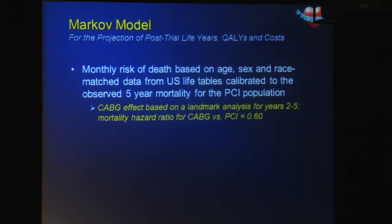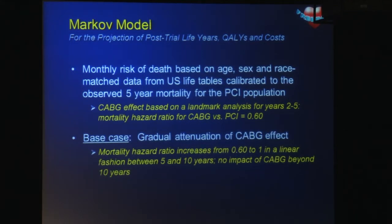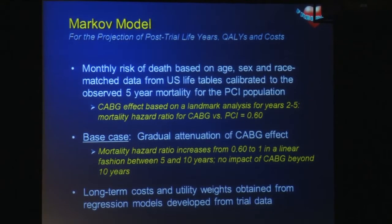We developed a Markov model to project the post-trial life years, quality-adjusted life years, and costs over the lifetime of the patient. We did this by estimating the monthly risk of death based on age, sex, and race-matched data from U.S. life tables, calibrated to the observed five-year mortality during the trial for the PCI population. We estimated the CABG effect based on a landmark analysis using data from years two through five in the trial, where we obtained a mortality hazard ratio for CABG versus PCI of 0.6. In our base case analysis, projecting forward in time, we assumed a gradual attenuation of that CABG effect, whereby the mortality hazard ratio increased from 0.6 to 1 in a linear fashion between years five and ten, with no impact of CABG assumed beyond ten years. We then applied long-term estimates of costs and utility weights derived from regression models fit to our trial data.